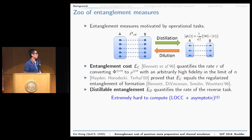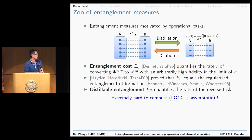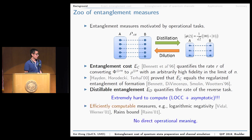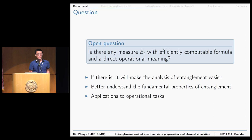For the reverse task, entanglement distillation, the distillable entanglement quantifies the rate at which you can obtain ebits from your target state. These two entanglement measures are very fundamental and operationally motivated. However, they are extremely hard to compute. One difficulty is the complex structure of LOCC, and another is that you need to solve the asymptotic case. There are also some efficiently computable measures, like log negativity and the robustness, but these do not have a direct operational meaning. This raises a natural and fundamental question: is there any entanglement measure with both an efficiently computable formula and a direct operational meaning?